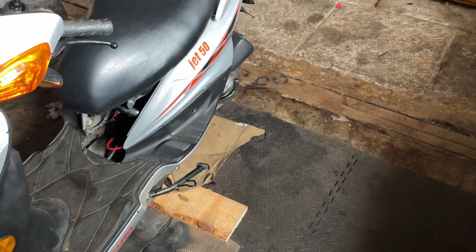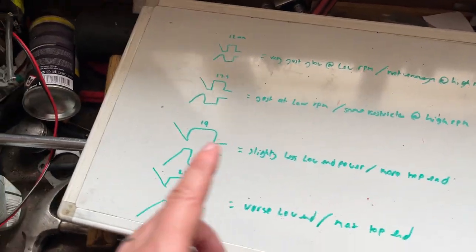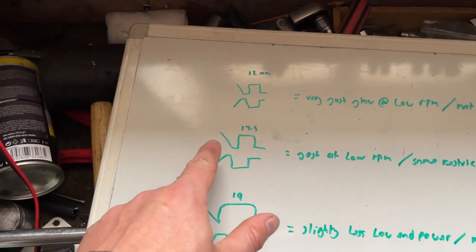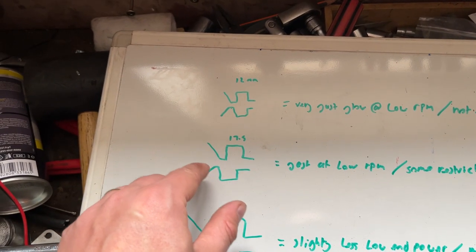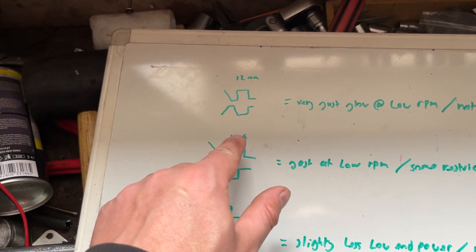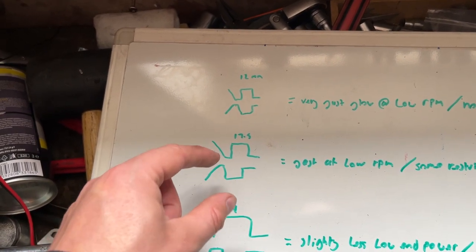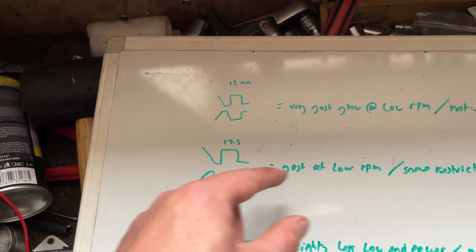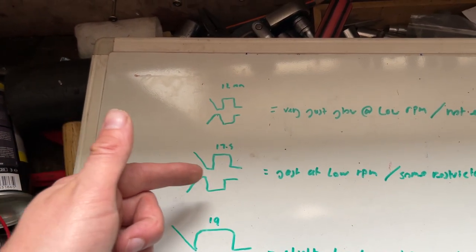So obviously you're going to need more air and fuel to fill up that extra 20cc of capacity. A larger carburetor does make some degree of sense because how much air flows through is dictated by the size of the carburetor. So if you've got 17.5, that's the size of the opening that dictates how much air can go through.